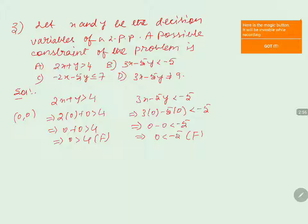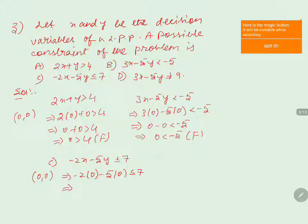For option 3, minus 2x minus 5y less than or equals to 7, substituting the origin: minus 2 into 0 minus 5 into 0 less than or equals to 7 gives 0 less than or equals to 7, which is true. So the possible constraint of the problem is option 3: minus 2x minus 5y less than or equals to 7.